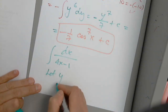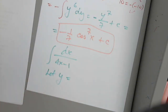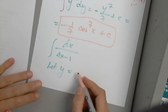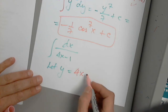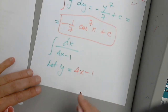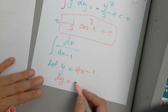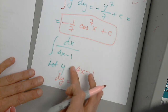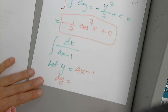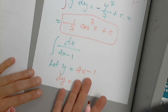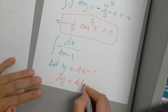Here we're going to let y be 4x minus 1. So then dy will be — you have to differentiate the function and put in x — which is 4 dx.